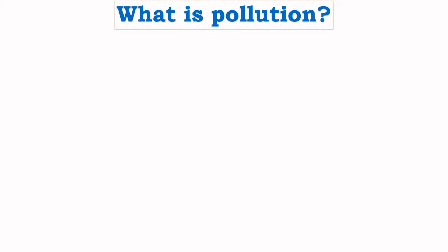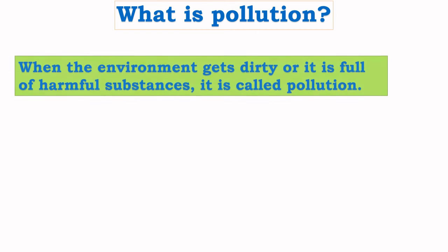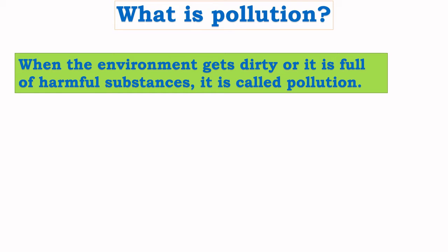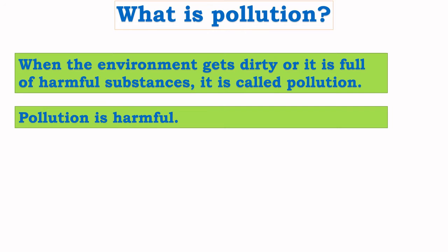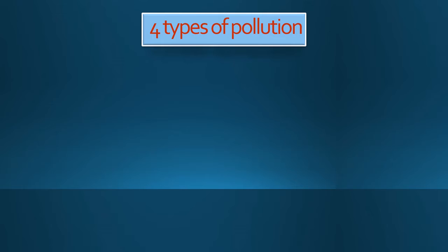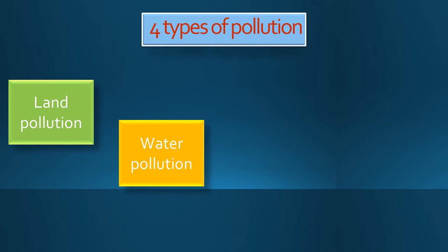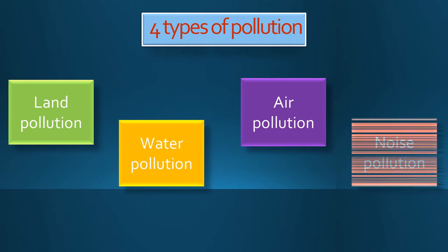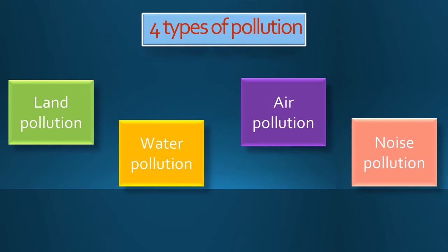Now let us see what is pollution. When the environment gets dirty or it is full of harmful substances, it is called pollution. Pollution is harmful. We may fall sick if we live in a polluted environment. There are four types of pollution: land pollution, water pollution, air pollution and noise pollution. Let us see all these types of pollution in detail.